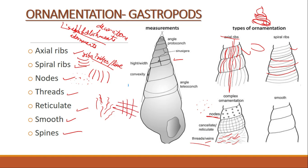Then you have reticulate, which means a network-like structure — something like a net. And then we have smooth, which means you don't have anything present at all — no embellishments or any ornamentation, just a properly smooth surface.